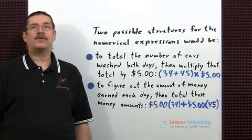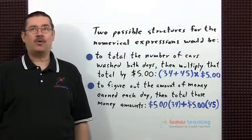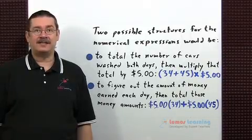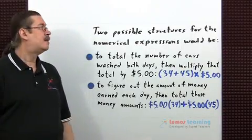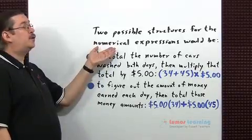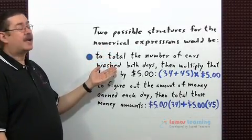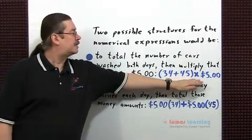For the first part of this question, we want to write two different numerical expressions that could be used to calculate the total money earned by the Spanish club if they were to wash 34 cars on Saturday and 45 cars on Sunday. Two possible structures for the numerical expressions would be to total the number of cars washed both days, then multiply that total by $5, and you get the following expression right here.